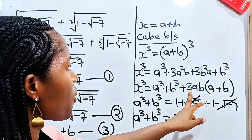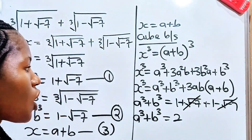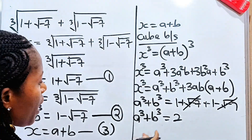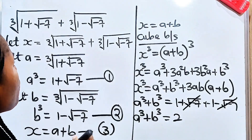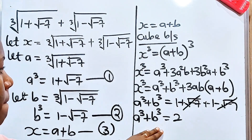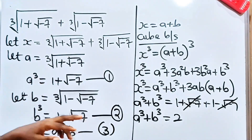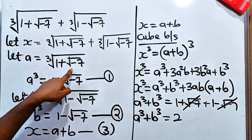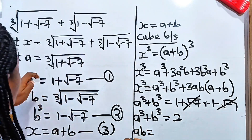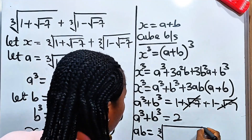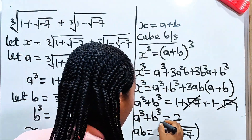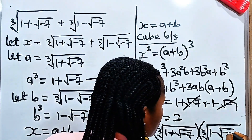Another thing we need is 3ab — so first we need to find ab. We have a³ + b³ = 2. Now, ab means: a is the cube root of (1 + √(−7)) and b is the cube root of (1 − √(−7)), so ab equals the cube root of (1 + √(−7)) multiplied by the cube root of (1 − √(−7)).